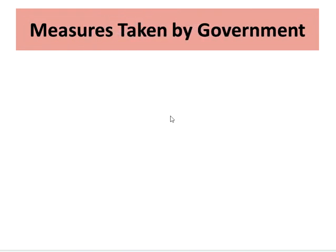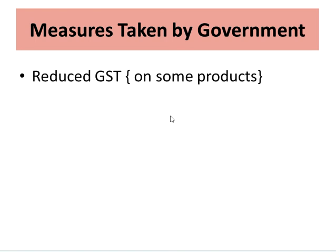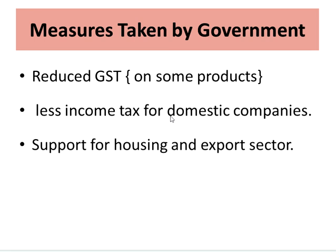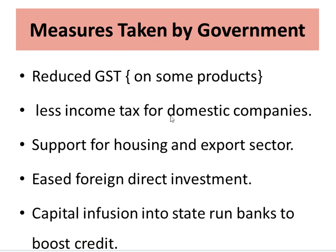To overcome the above recession, some of the measures taken by the Government of India are: reduced GST on some products, less income tax for domestic companies, support for the housing and export sector, eased foreign direct investment, and capital infusion to state-run banks to boost credit.